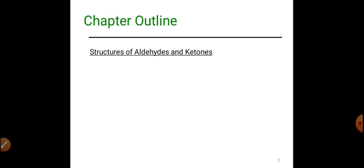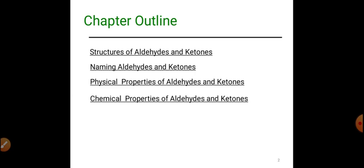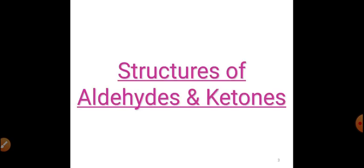The chapter outline includes: first, the structure of aldehydes and ketones; followed by their nomenclature — how we name aldehydes and ketones; then their physical properties; and finally the chemical properties of aldehydes and ketones.